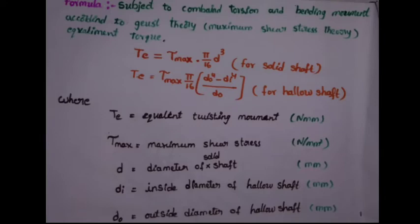To combine torsion and bending moment according to guest theory, max shear stress theory: equivalent torque T equals tau max into pi by 16 d cube for solid shaft. T equals tau max pi by 16 d o power 4 minus d i power 4 by d o for hollow shaft.